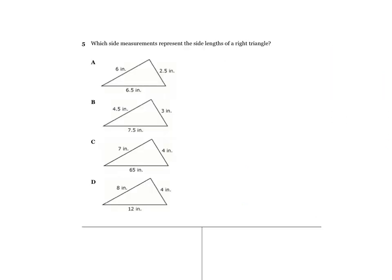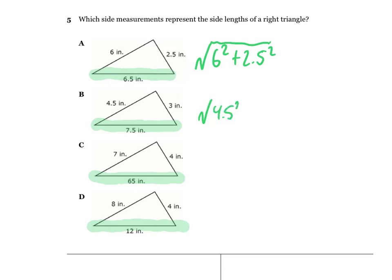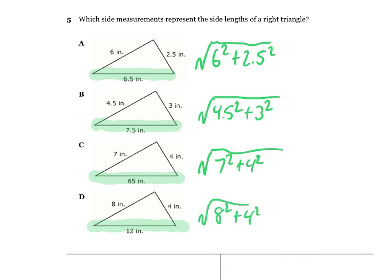On number 5, it says which side measurements represent the side lengths of a right triangle. The longest side in each option is going to be side c. My recommendation is to use a squared plus b squared equals c squared and solve for side c. For option A: square root of 6 squared plus 2.5 squared. For B: square root of 4.5 squared plus 3 squared. For C: square root of 7 squared plus 4 squared. Work through each one and figure out which matches.